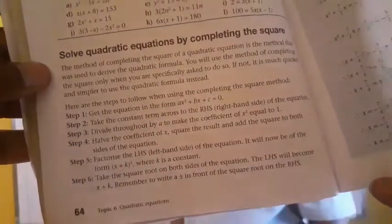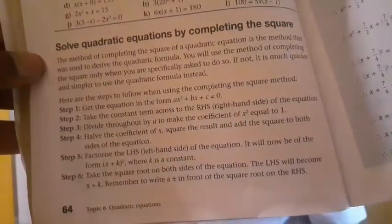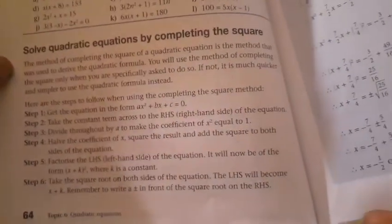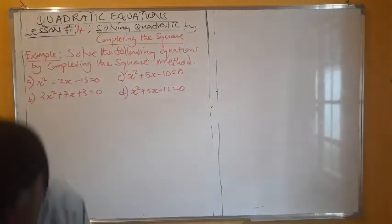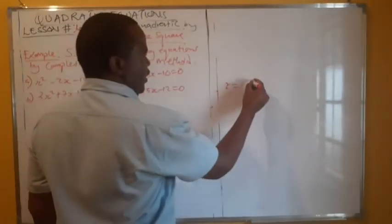I hope you're able to follow those steps — you can copy them down so you're able to use them in case you are stuck. So, completing the square is the method that derives the quadratic formula that we have been using.